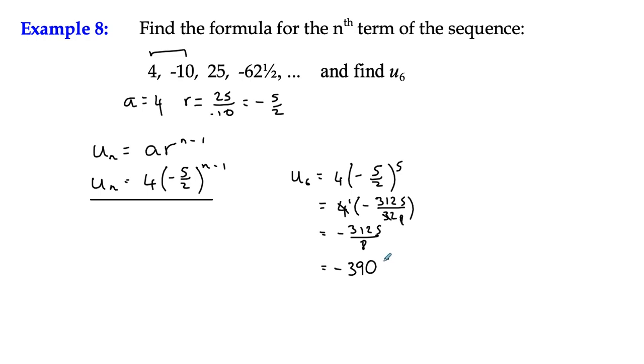That gives us 8 into 3,125 gives us 390 remainder 5, so 5 eighths. Or you might have number crunched negative 390.625. And that would be fine.